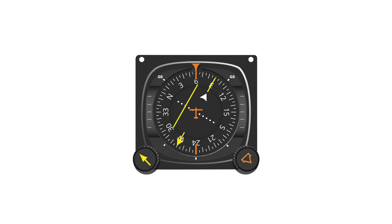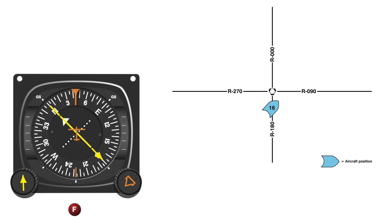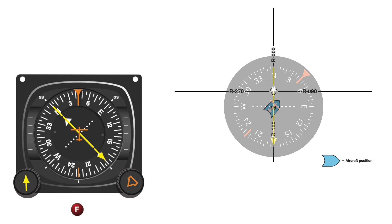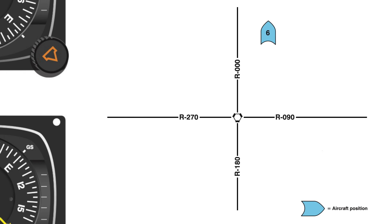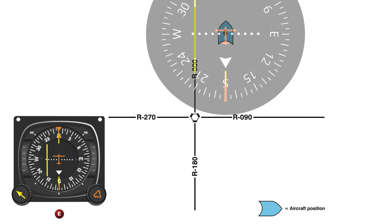Taking that concept up a notch and working with an HSI — where the navigation needle is superimposed over your heading indicator — on instrument rating written test questions you're going to have to deal with heading as a factor. Looking at a figure with multiple aircraft positions, aircraft 16 is directly south of the station and it corresponds to image F, because not only does the course deviation indicator show the aircraft on the correct radial, but it also shows the aircraft pointed to the Northeast, which is an important part of matching these aircraft for the instrument rating.